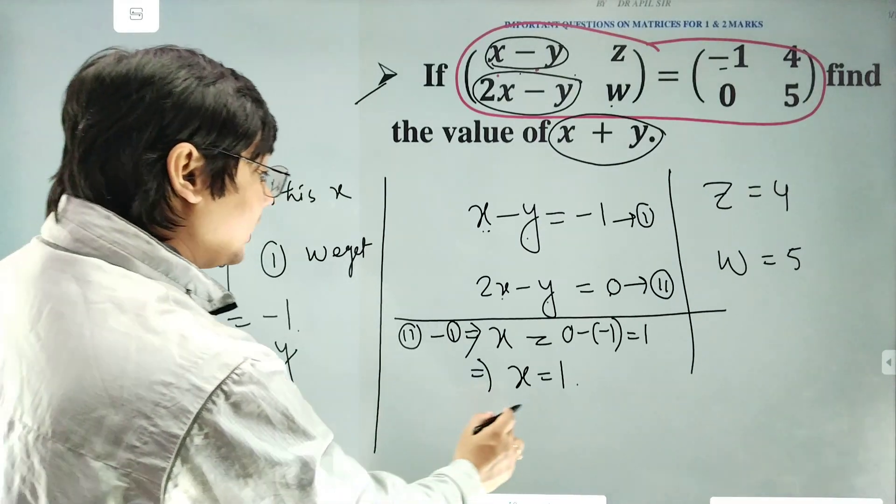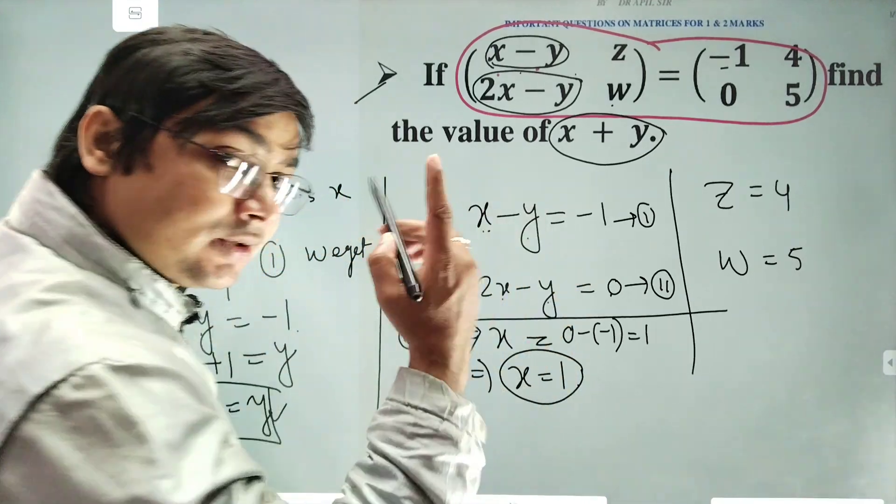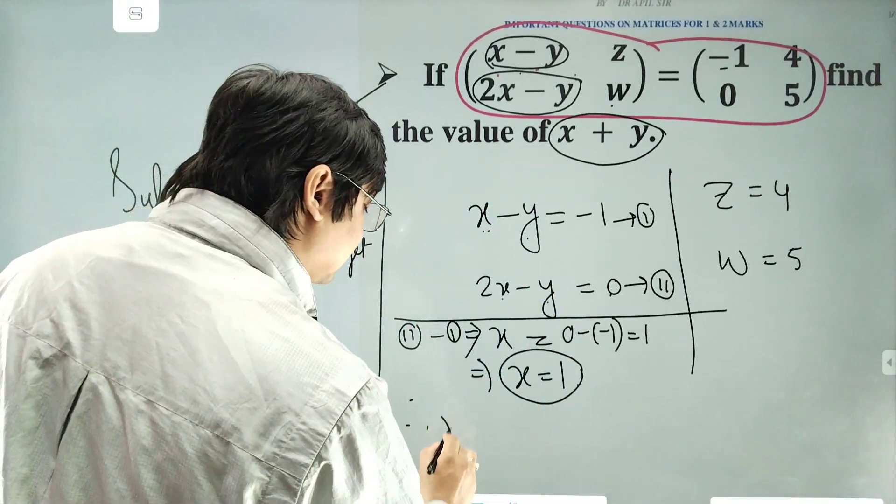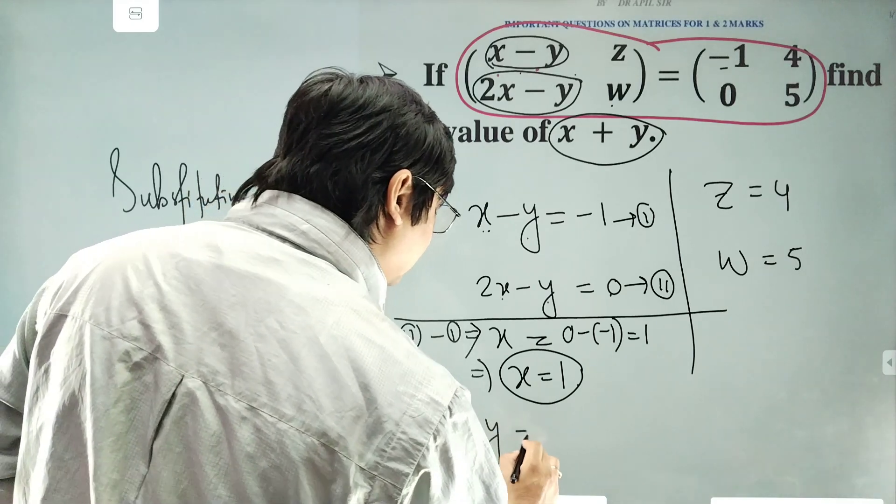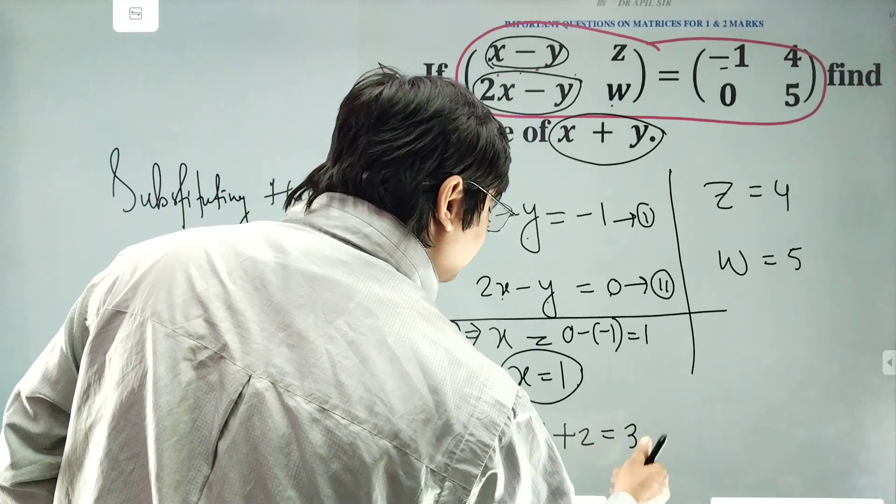So y is equal to 2 and x is equal to 1. What will be x plus y? Guys, x plus y will be here 1 plus 2, that means 3.